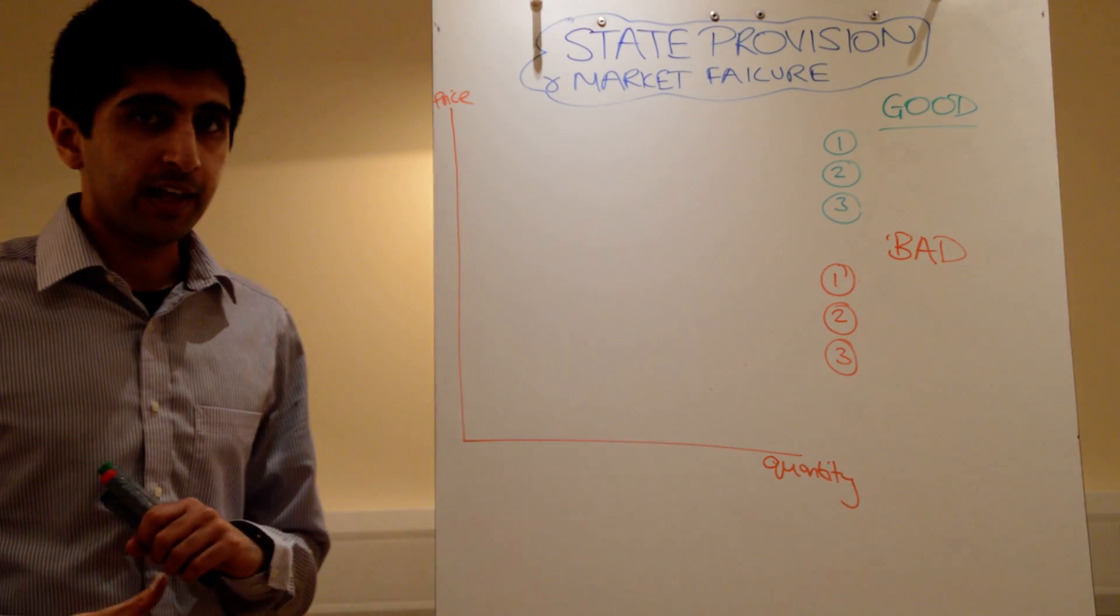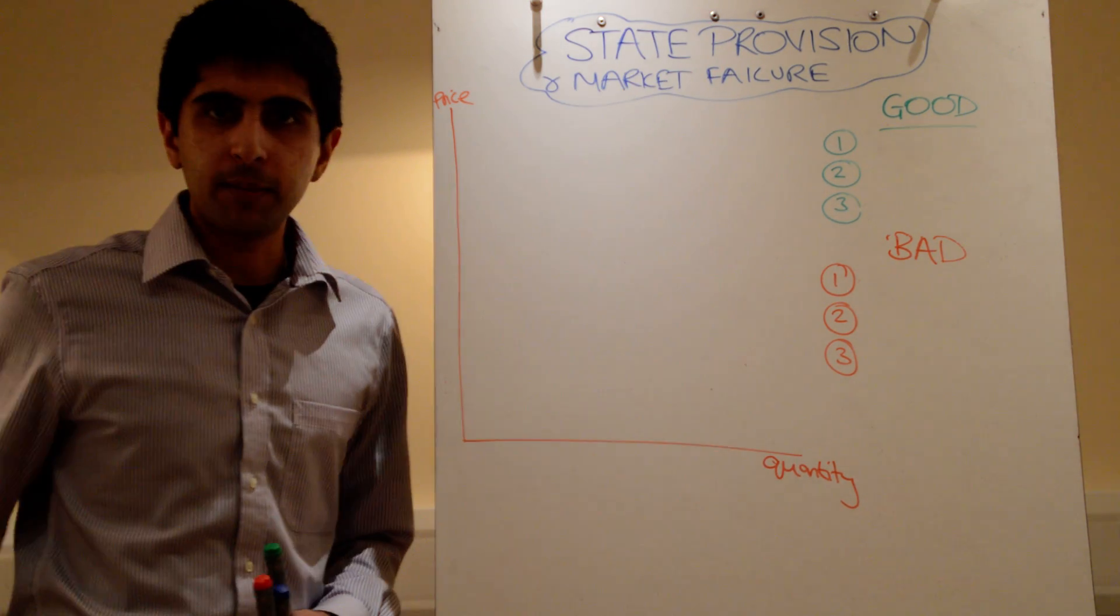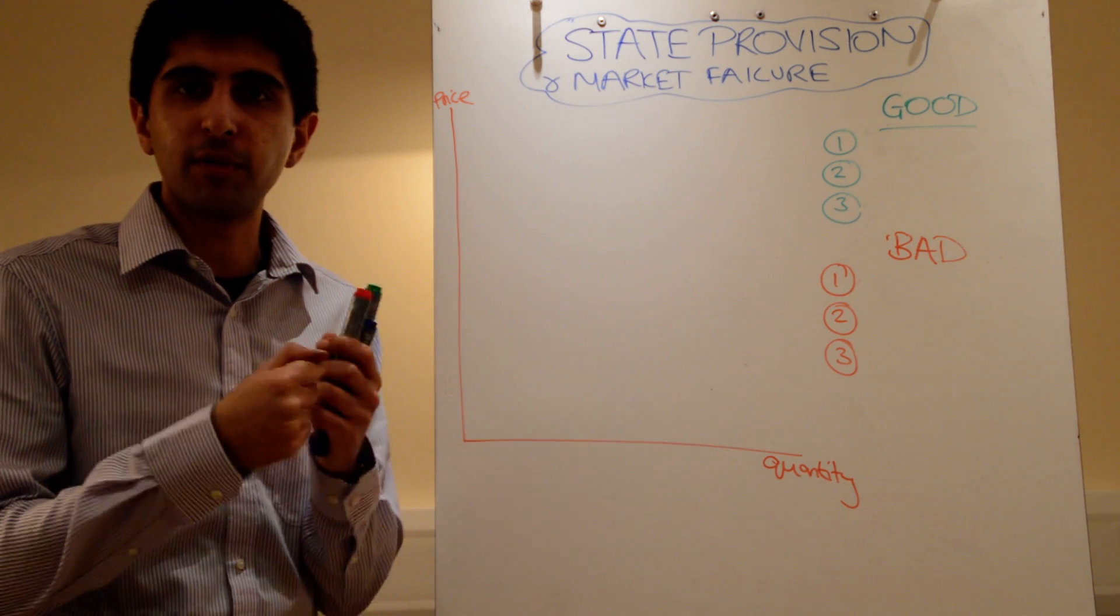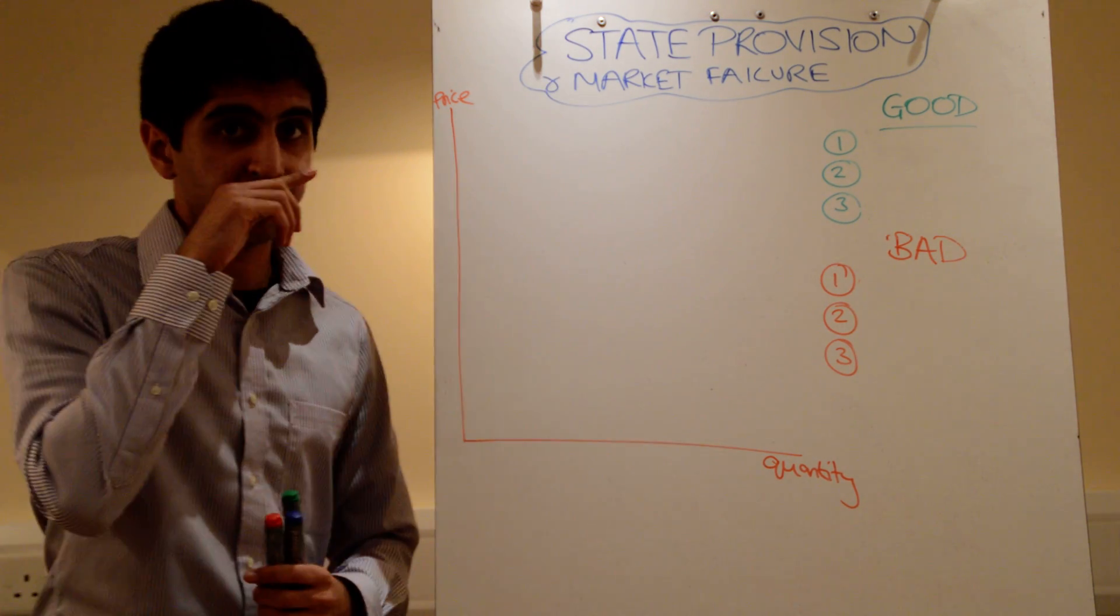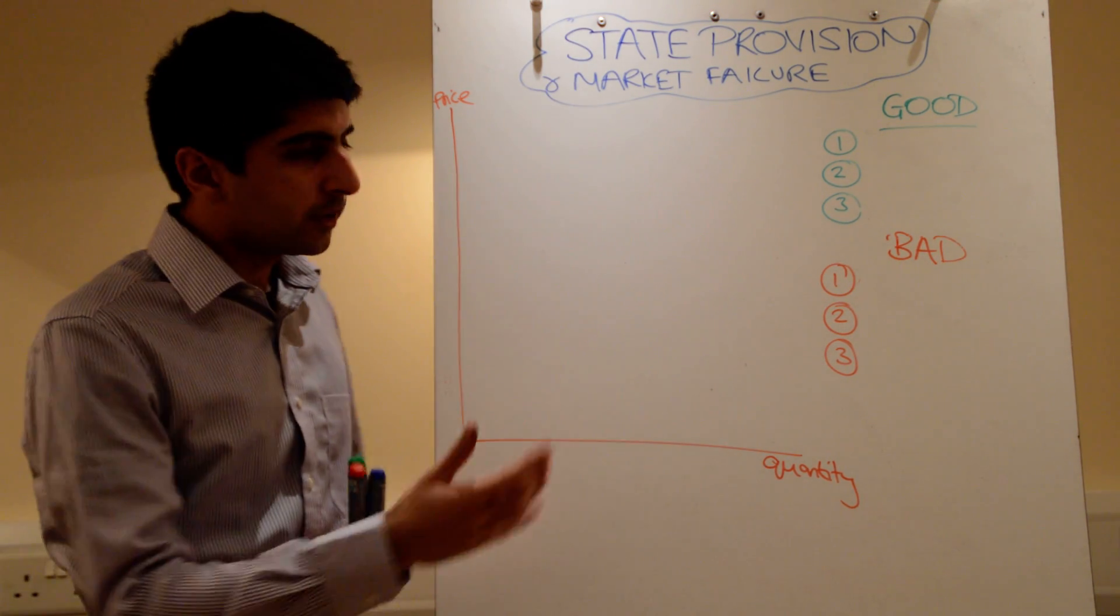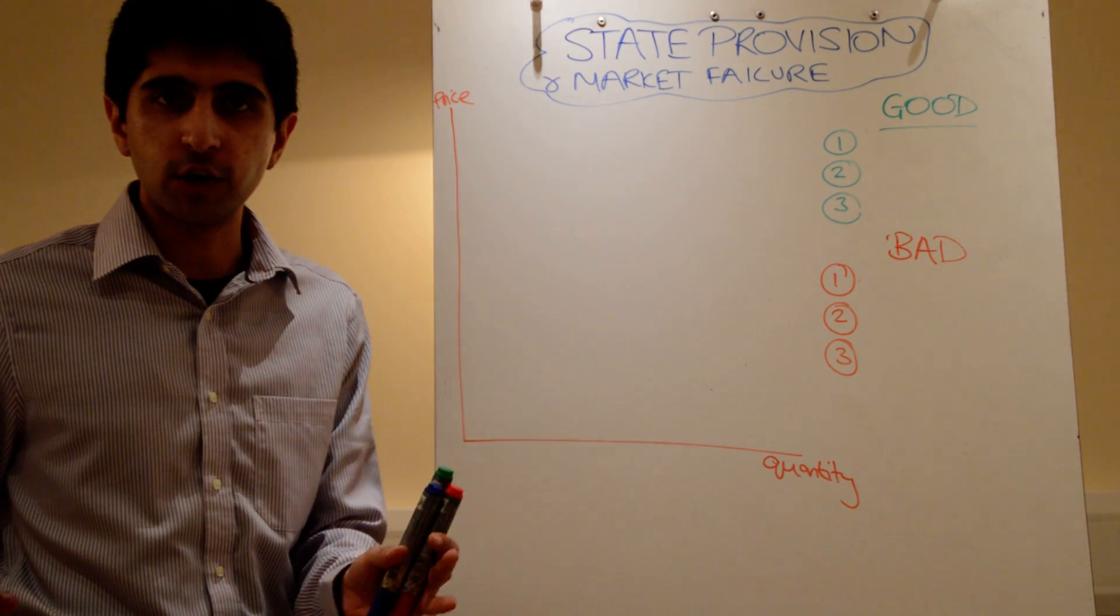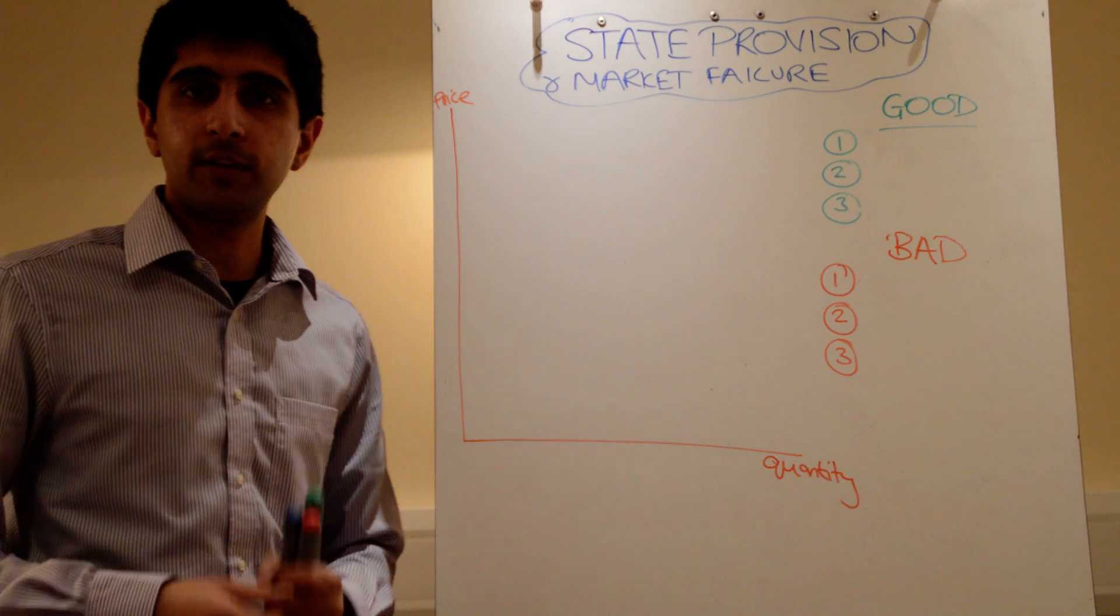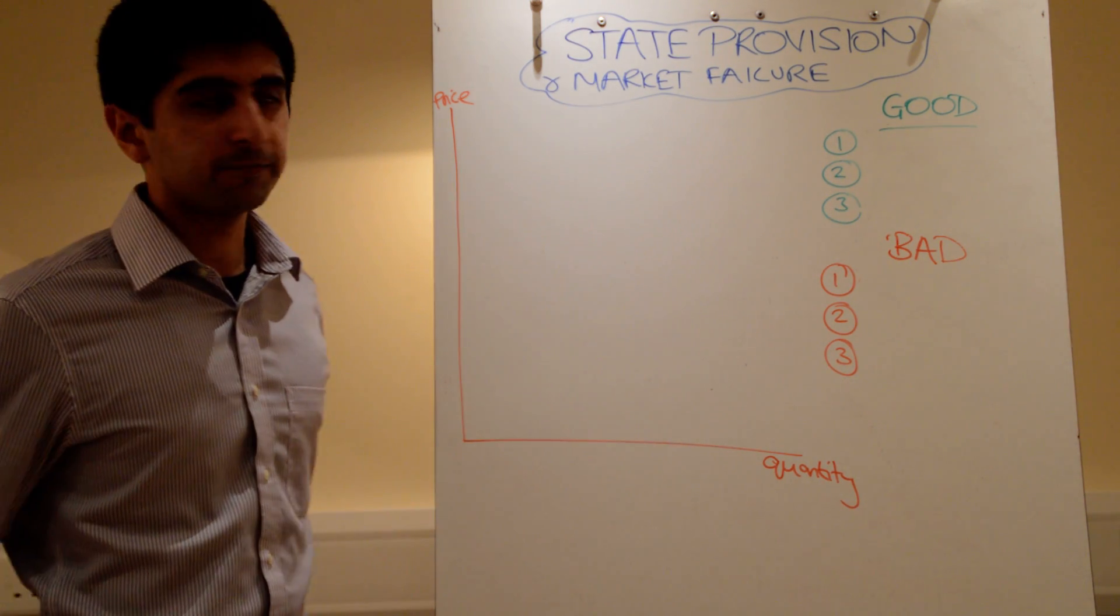Okay, for merit good market failure and for public good market failure, there could be an argument for state provision, where the government just comes in and provides all the resources in that market, also known as direct provision. The reason the state would decide to do this is simply because they think the free market just will never do a good job, even if they were subsidized heavily. So then the state comes in and just does it all itself.